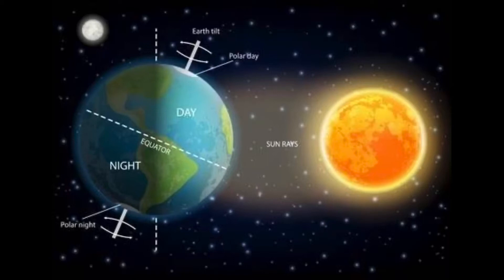Rotation takes us from daytime to nighttime and back to the very beginning of daytime again before the cycle starts over. As Earth rotates, light from the sun falls on one half of Earth — we call this daytime. The other half of Earth is in darkness, and we call this nighttime. As Earth continues to rotate, the part that had sunlight moves into darkness, and the part that had darkness moves into the sunlight.